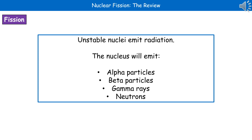Welcome to our review on nuclear fission. Hopefully we remember from our earlier work on radiation that unstable nuclei emit radiation. So the nucleus will emit alpha particles, beta particles, gamma rays or neutrons, or a combination of them.